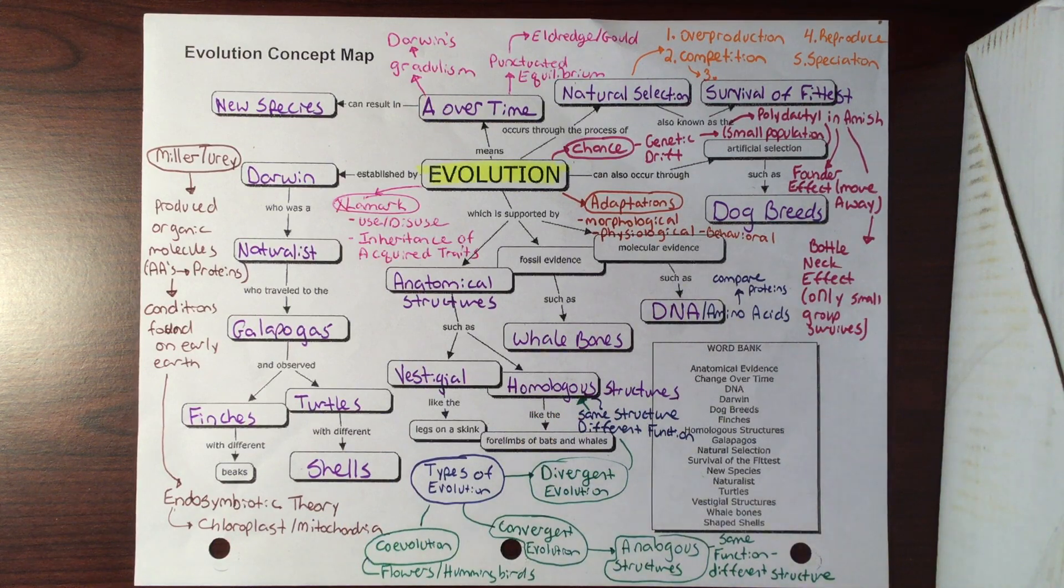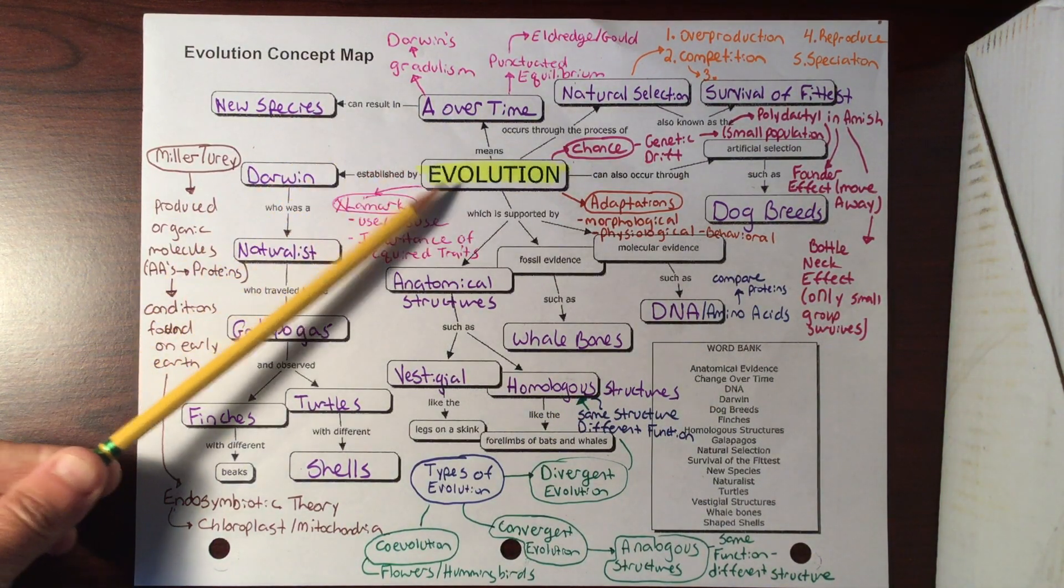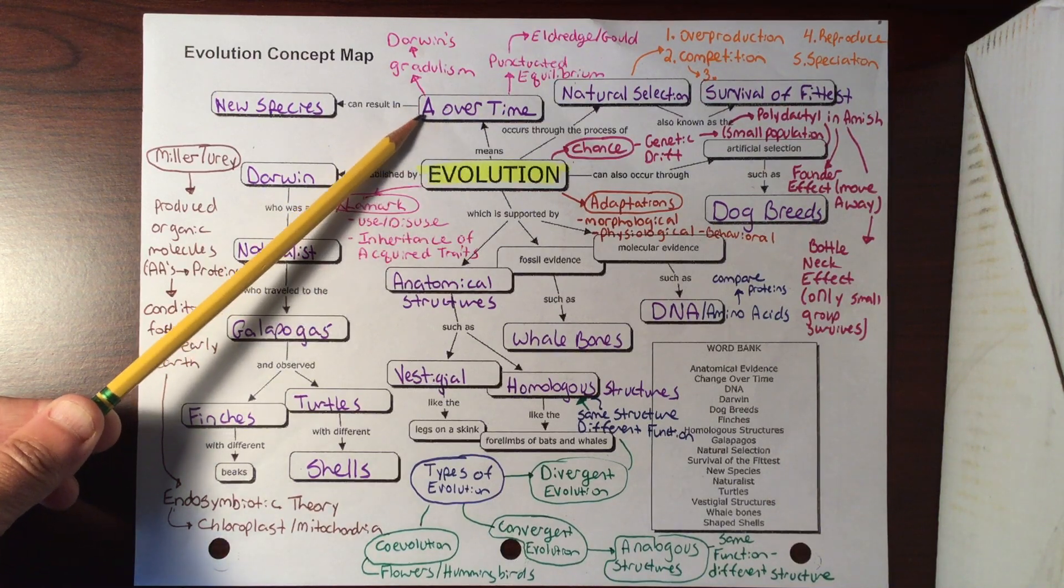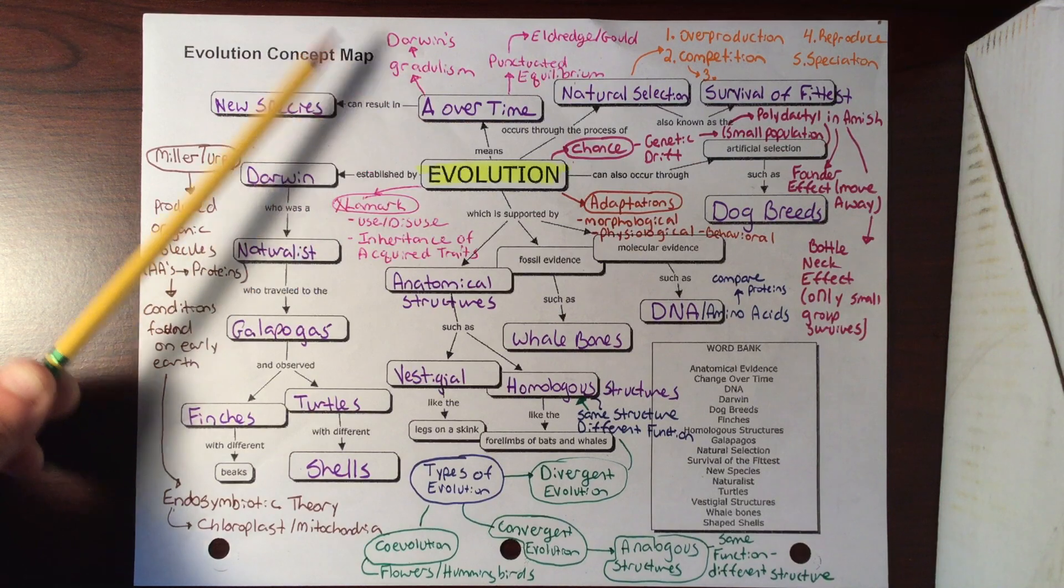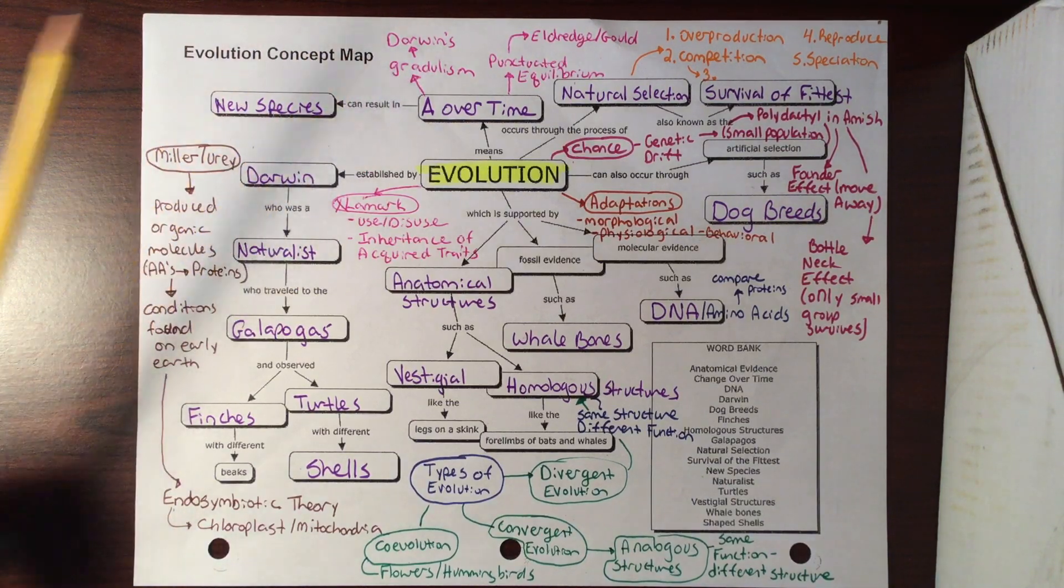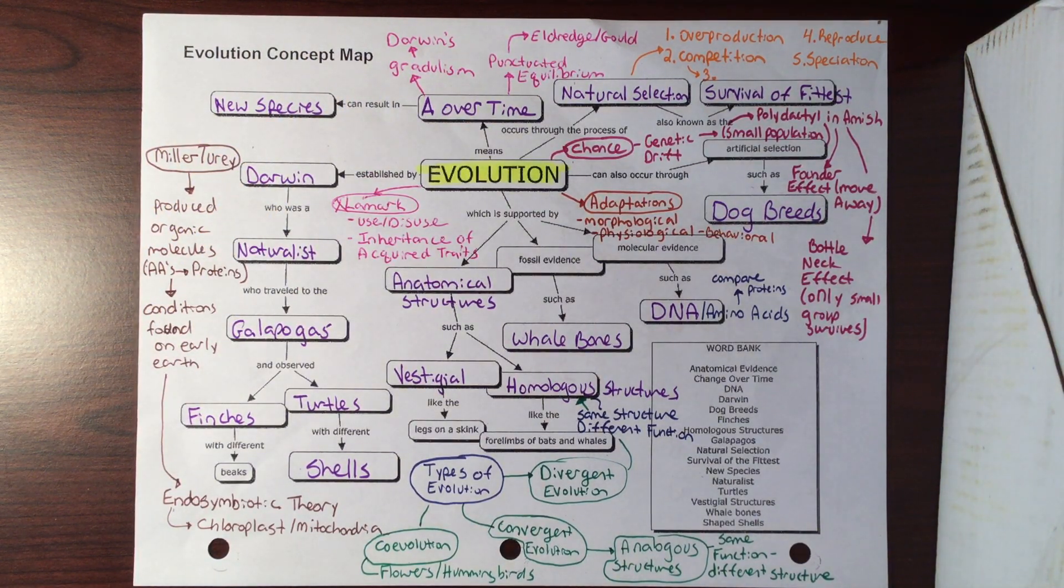Here's some other little things that you guys should be aware of. Evolution means a change over time. With this change over time, there were two ideas of it. There was Darwin's gradualism, where he said there was kind of this accumulation of traits that collected over time.